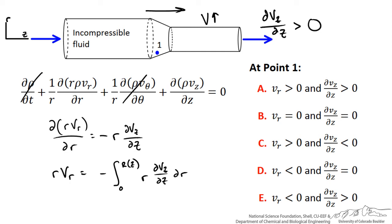The key part of this is that we can see that the term RVR, the radius times the radial velocity, is equal to a negative value. So we know this is positive, as we have just shown.